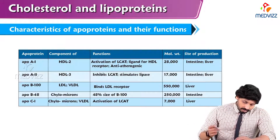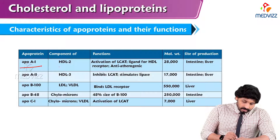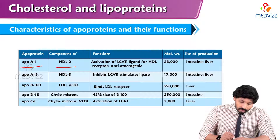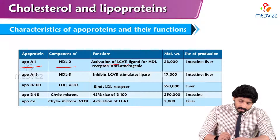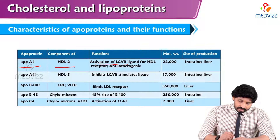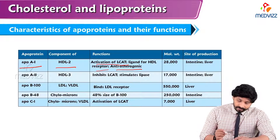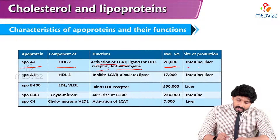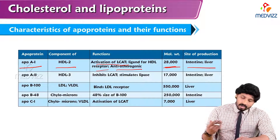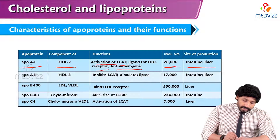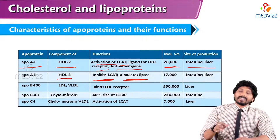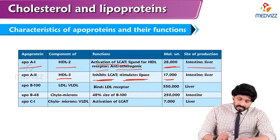Looking at the apoproteins and their functions: ApoA1 is a component of HDL2, is involved in activation of the enzyme LCAT, acts as a ligand for the HDL receptor, and is anti-atherogenic. Its molecular weight is 28,000 Daltons and it is produced in the intestine and liver. ApoA2 is present in HDL3, inhibits LCAT, and stimulates lipase. Its molecular weight is 17,000 Daltons and it is also produced in the intestine and liver.